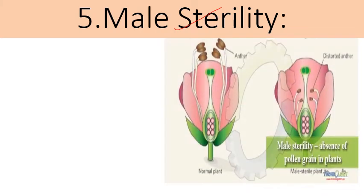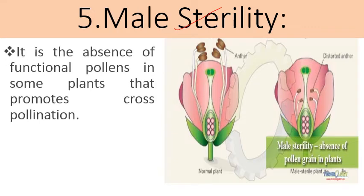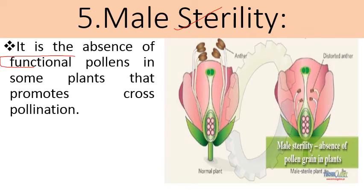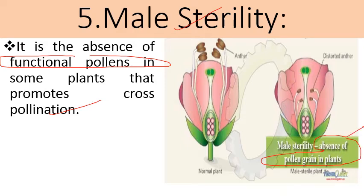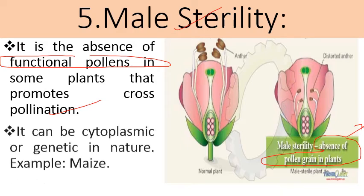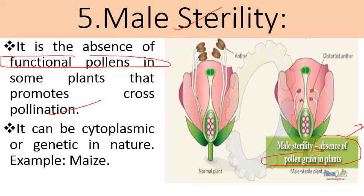The next condition for cross pollination is male sterility. Here the male part is sterile — it is unable to produce functional or active pollen grains. It is the absence of functional pollen grains in some plants that promotes cross pollination. Male sterility can be cytoplasmic or genetic in nature. An example is maize.